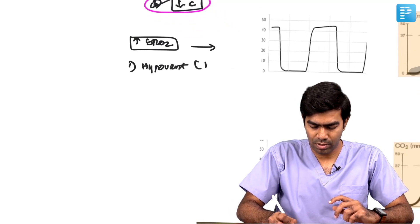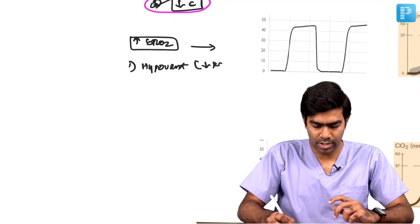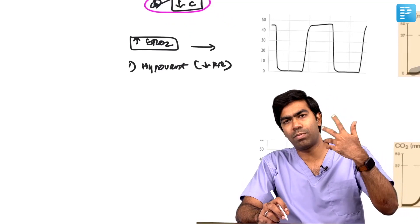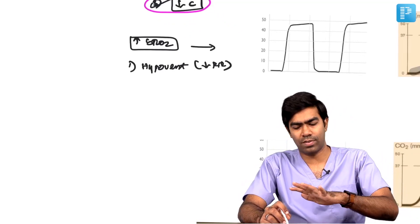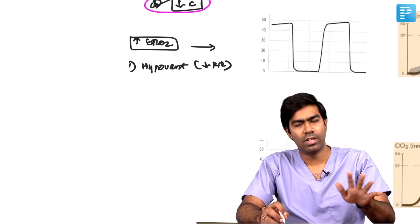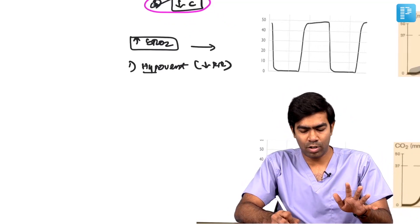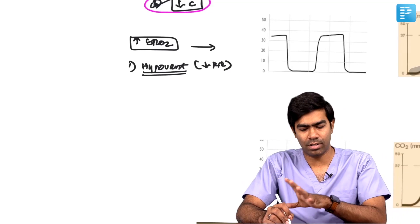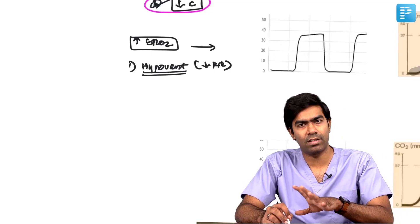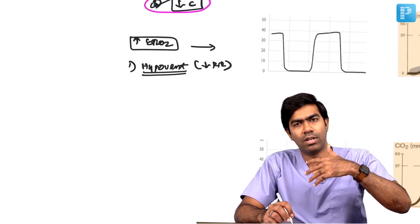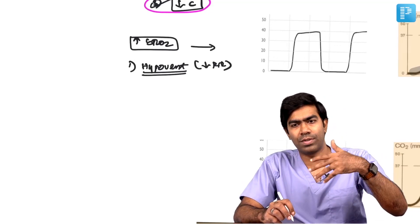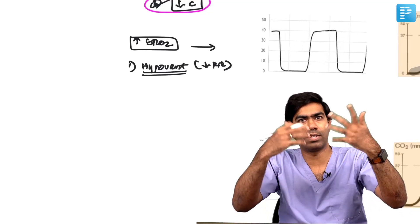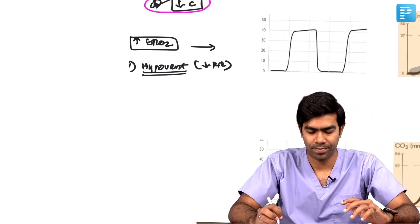Classically, hypoventilation is due to reduced respiratory rate. Remember, there is something called hypopneic hypoventilation — we are not talking about that. We are typically talking about bradypneic hypoventilation. Because of the reduced respiratory rate, your amount of CO2 excreted per breath will start increasing.